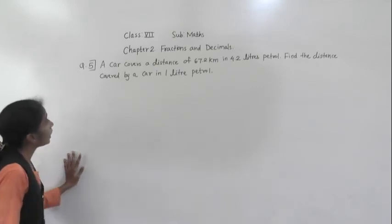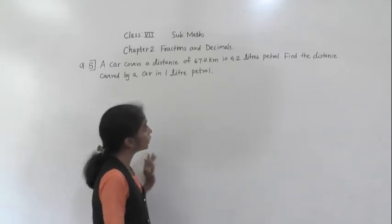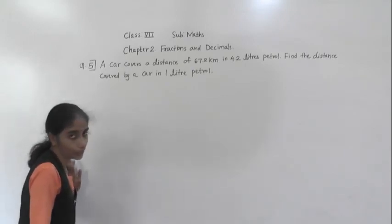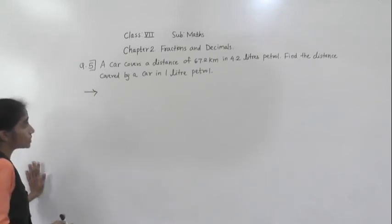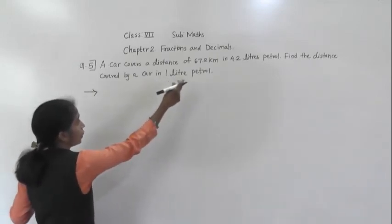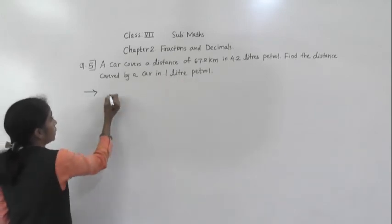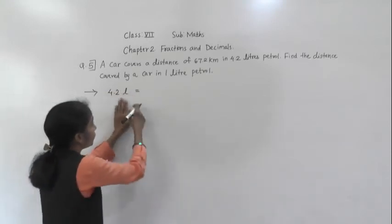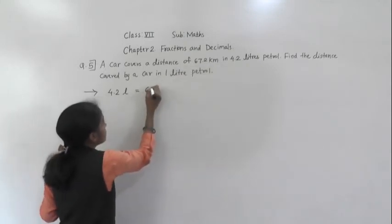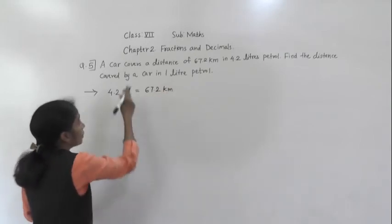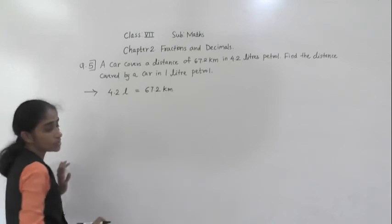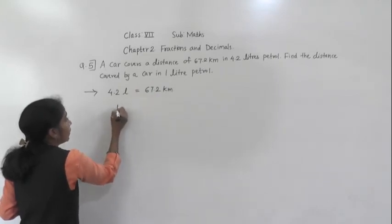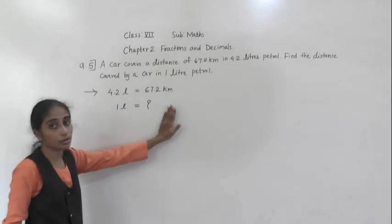Let's solve question number 5. A car covers a distance of 67.2 km in 4.2 litres of petrol. Find the distance covered by a car in 1 litre petrol. Now first write what is given: in 4.2 litre petrol, the car covers a distance of 67.2 km. Find the distance covered by a car in 1 litre petrol.